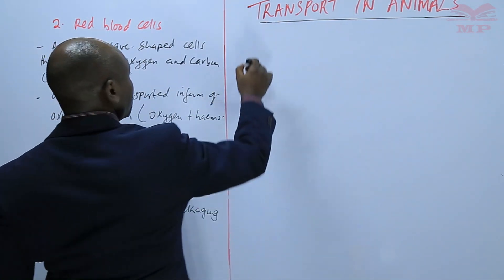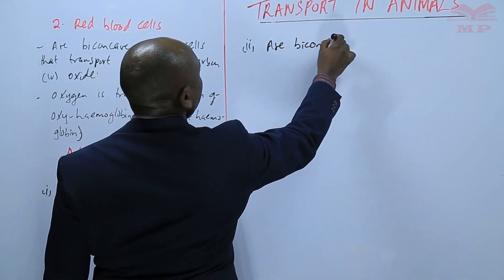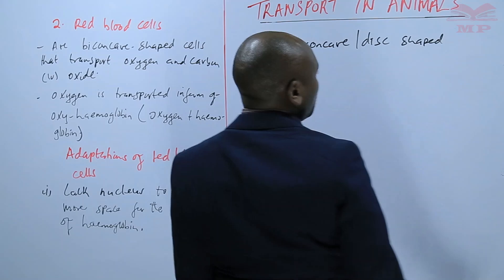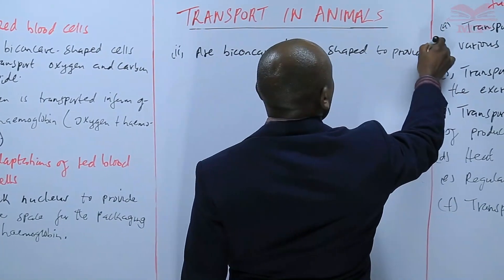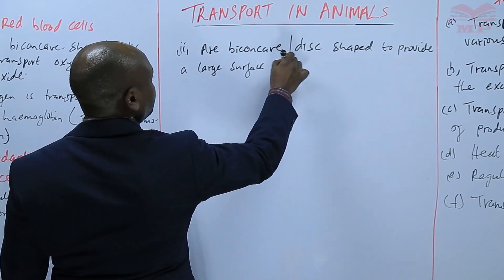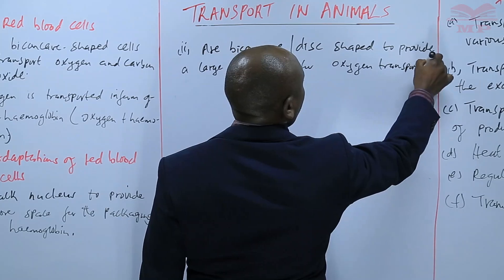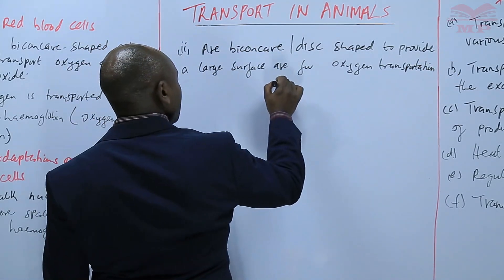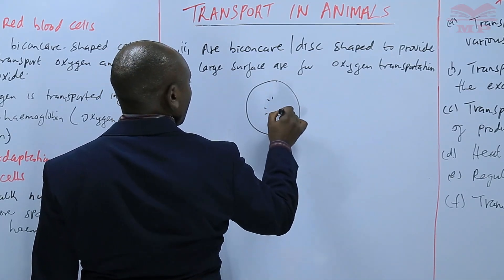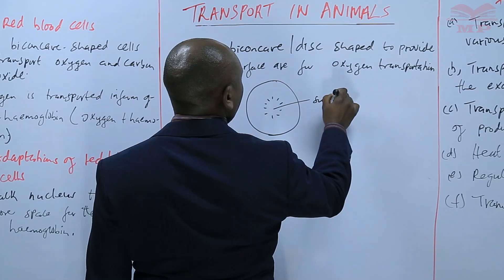Another adaptation: they are biconcave or disc-shaped to provide a large surface area for oxygen transportation. So the shape of the red blood cells is biconcave, with a sunken center — disc-shaped with a sunken center.